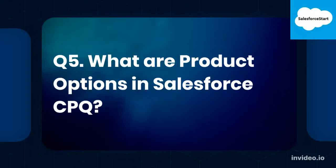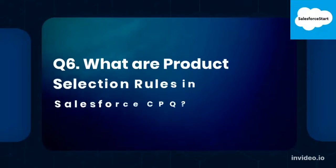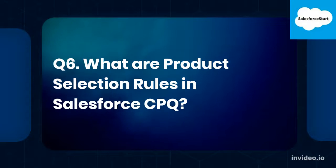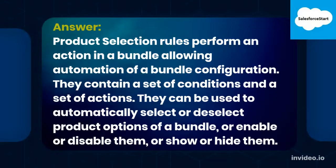Q5. What are product options in Salesforce CPQ? Product options are individual products that users can select from when configuring product bundles. Q6. What are product selection rules in Salesforce CPQ? Product selection rules perform an action in a bundle allowing automation of a bundle configuration. They contain a set of conditions and a set of actions. They can be used to automatically select or deselect product options of a bundle, or enable or disable them, or show or hide them.